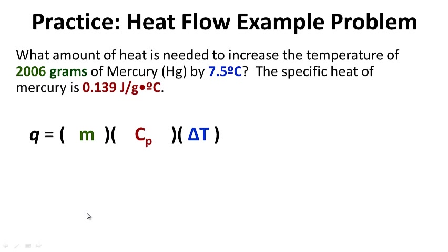Practice — try doing a problem on your own. When you're ready to check your work, hit play. What amount of heat is needed to increase the temperature of 2,006 grams of mercury by 7.5 degrees Celsius? The specific heat of mercury is 0.139 joules per grams degrees Celsius. In other words, how much heat do we need to add to 2,006 grams of mercury to raise its temperature by 7.5 degrees Celsius?